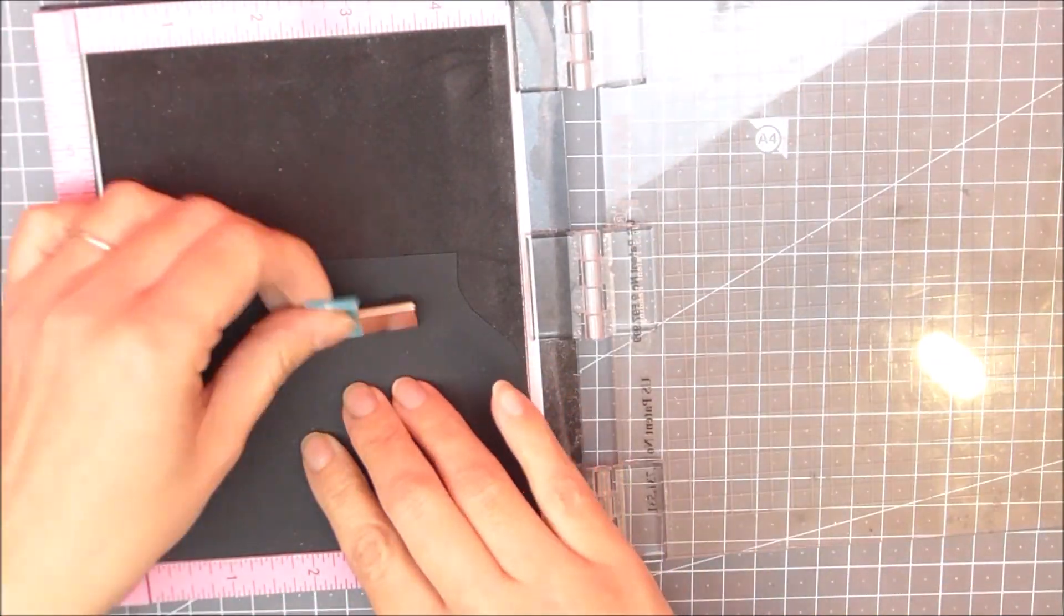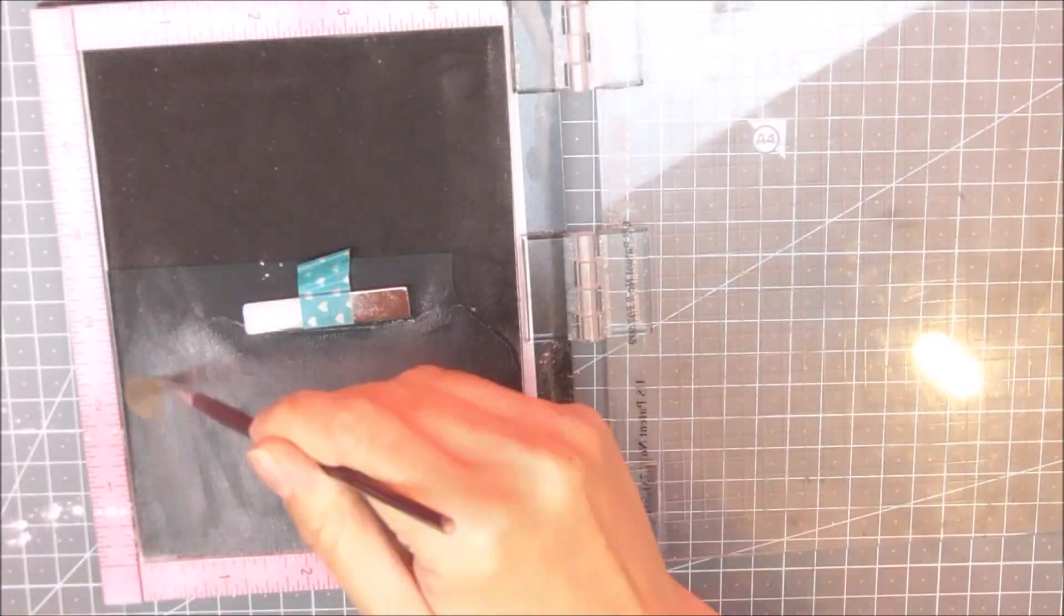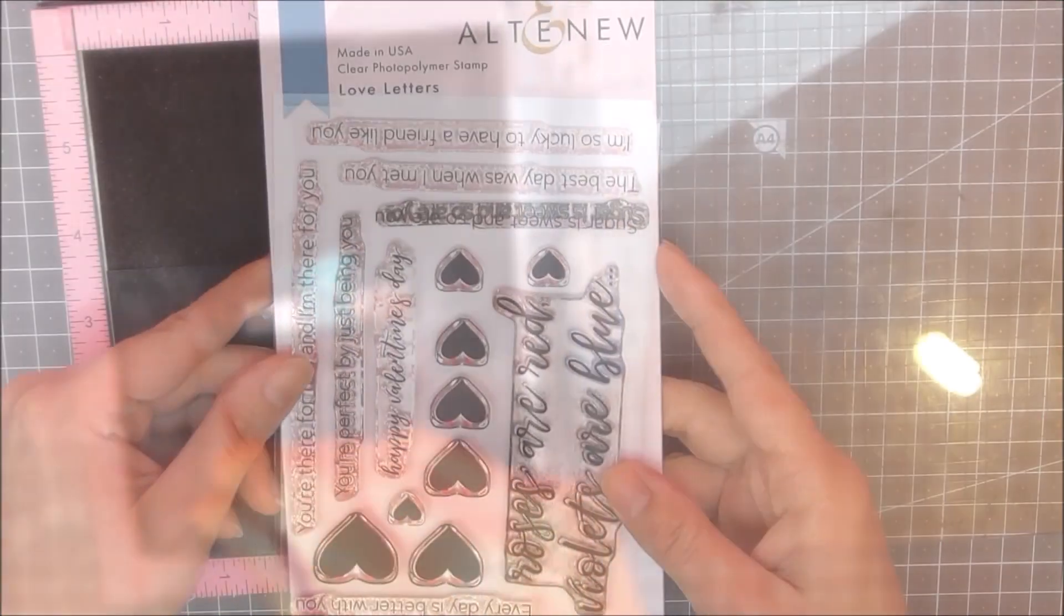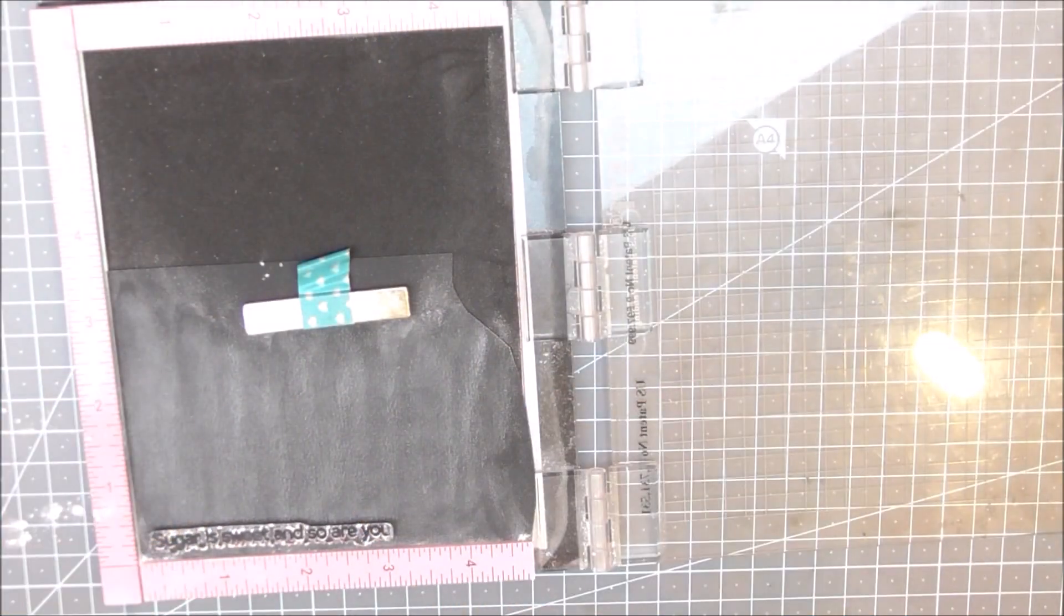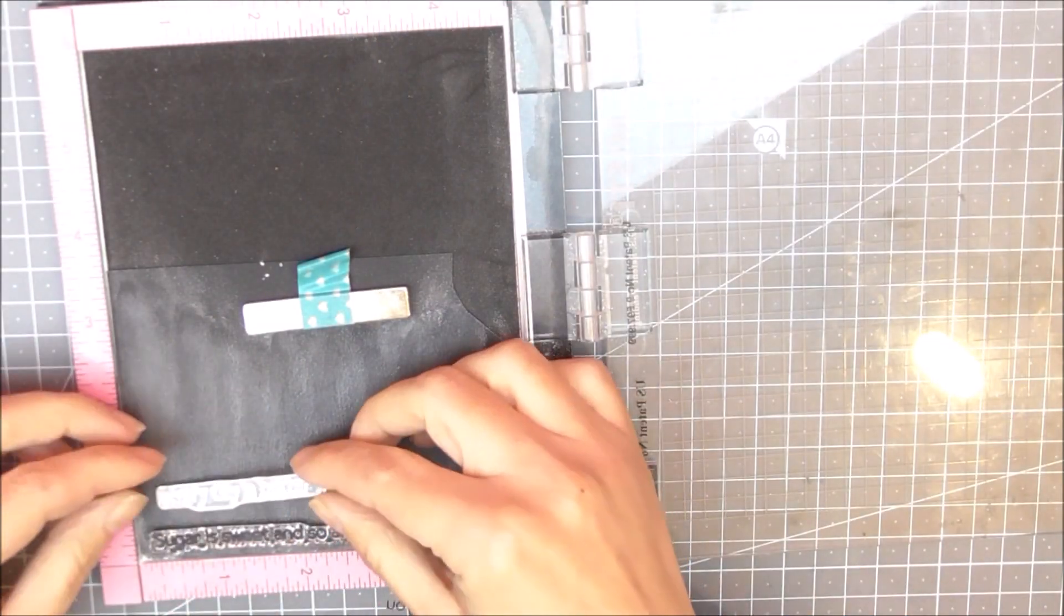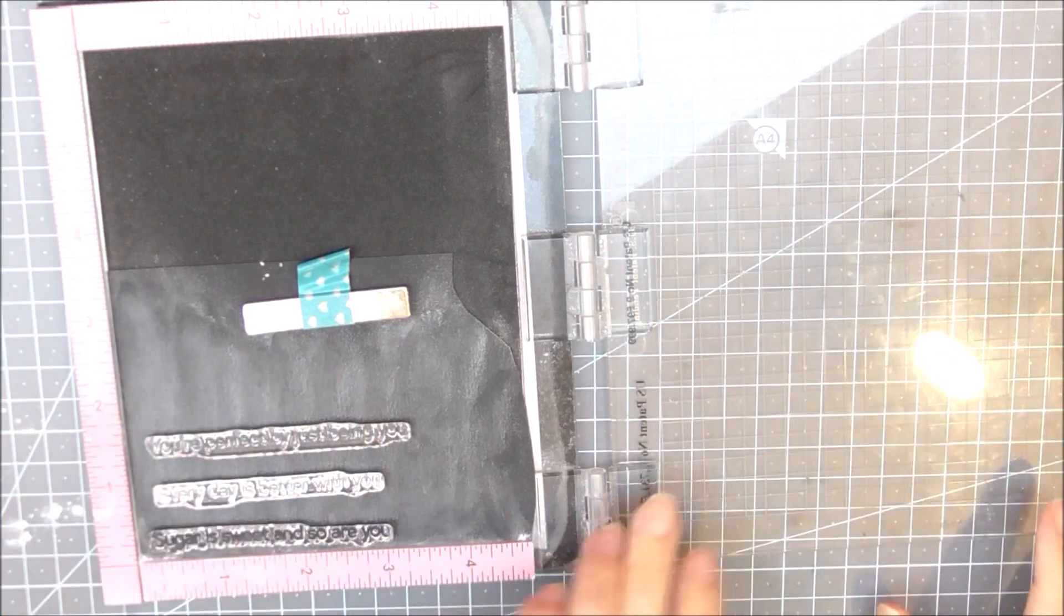I'm then going to do the sentiment, working on a piece of jet black cardstock. I'm just going to add a little bit of baby powder to act as anti-static powder, then use the Love Letters stamp set for my sentiments. I've chosen three of these and I'm going to line them up onto my jet black cardstock. Once I have the three of them in place, I'm going to close the lid to keep them in place, and then I can ink them up.